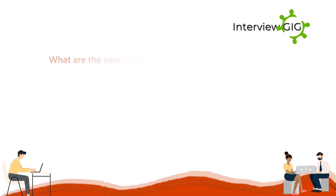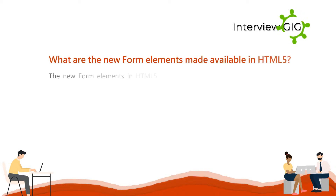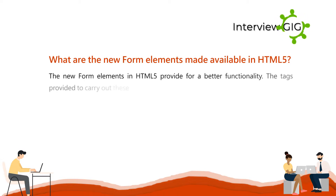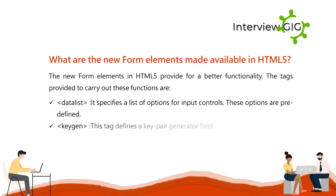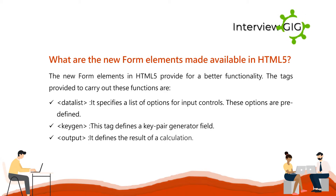What are the new form elements made available in HTML5? The new form elements in HTML5 provide better functionality. The tags provided are: DataList, which specifies a predefined list of options for input controls; KeyGN, which defines a key pair generator field; and Output, which defines the result of a calculation.